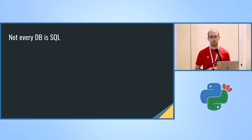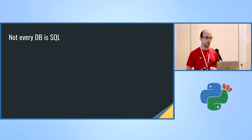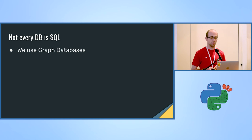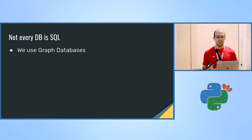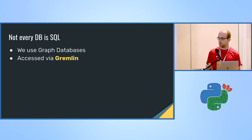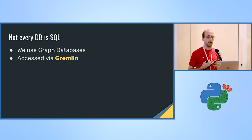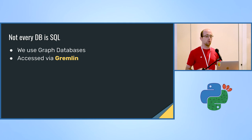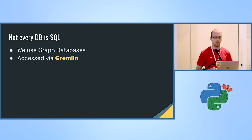The answer is that not every database is SQL-based. Specifically, we use graph databases, and we have a semi-legitimate use case for that. Graph databases are accessed via a language called Gremlin, and the role is to also enable us to store relations between entities across any type of table, which is quite hard to achieve properly with foreign keys in SQL.